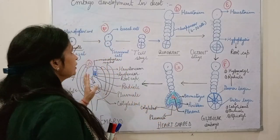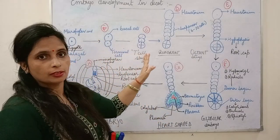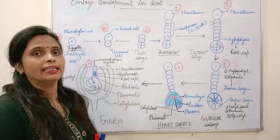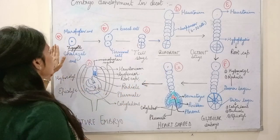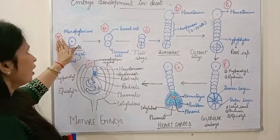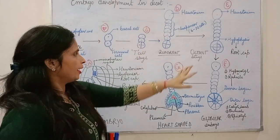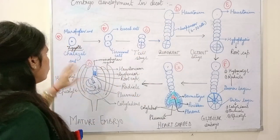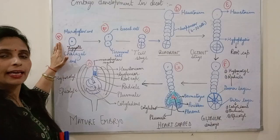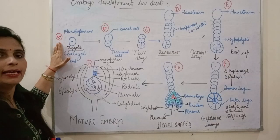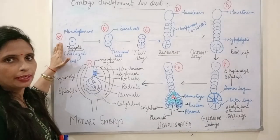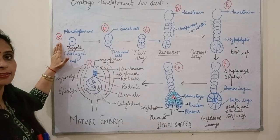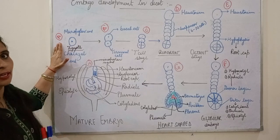These are the different stages shown in the development of dicot embryo, which I have shown in alphabets A, B, C, D, E, F, G, and H. So first, in a double fertilization, one male gamete fuses with the egg cell to fertilize.